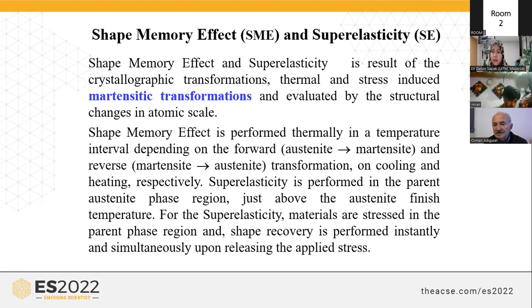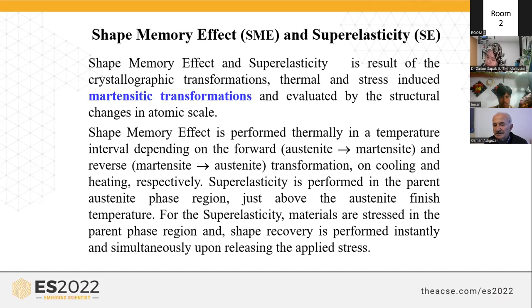Shape memory effect and superelasticity result from crystallographic transformations — thermal and stress-induced martensitic transformations — evaluated by the structural change at the atomic scale. Shape memory effect is performed thermally in a temperature interval depending on the forward austenite-to-martensite and reverse martensite-to-austenite transformations on cooling and heating. Superelasticity is performed in the parent phase region just above the austenite finish temperature; materials are stressed within the elasticity limit and shape recovery occurs instantly upon releasing the applied stress, behaving like an elastic material.